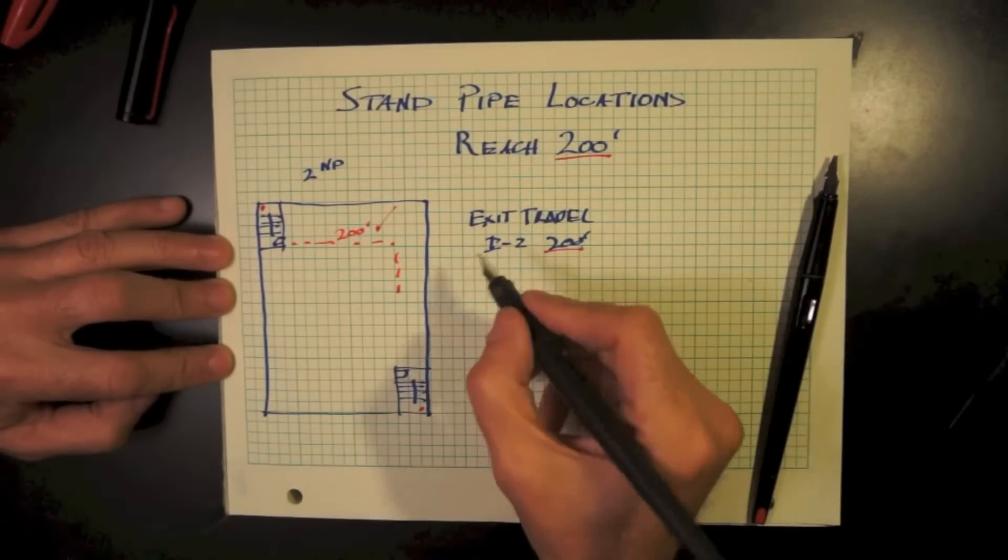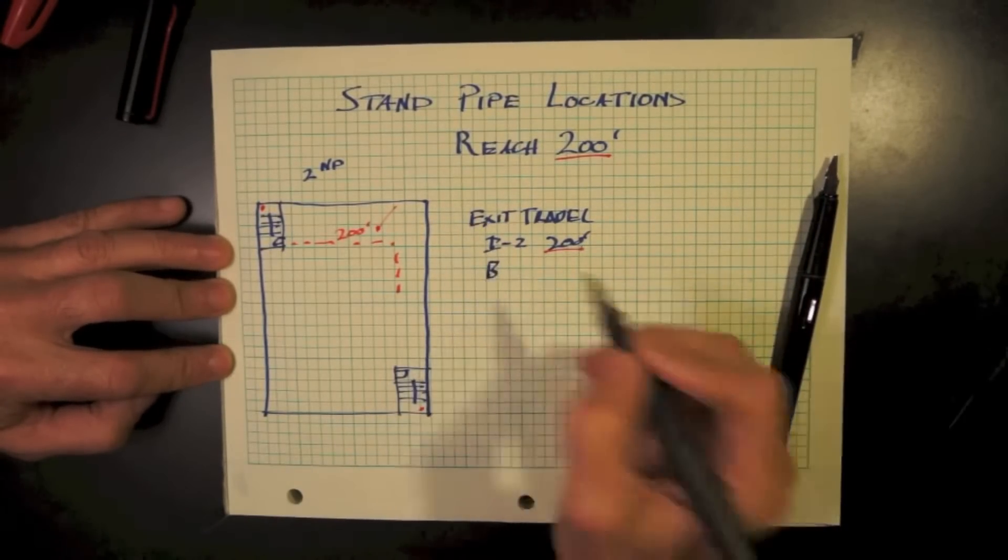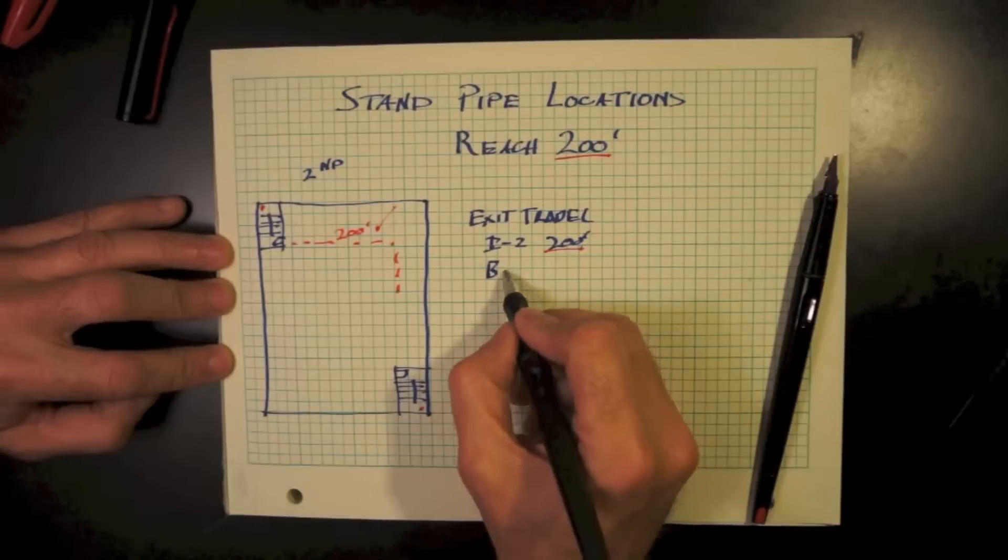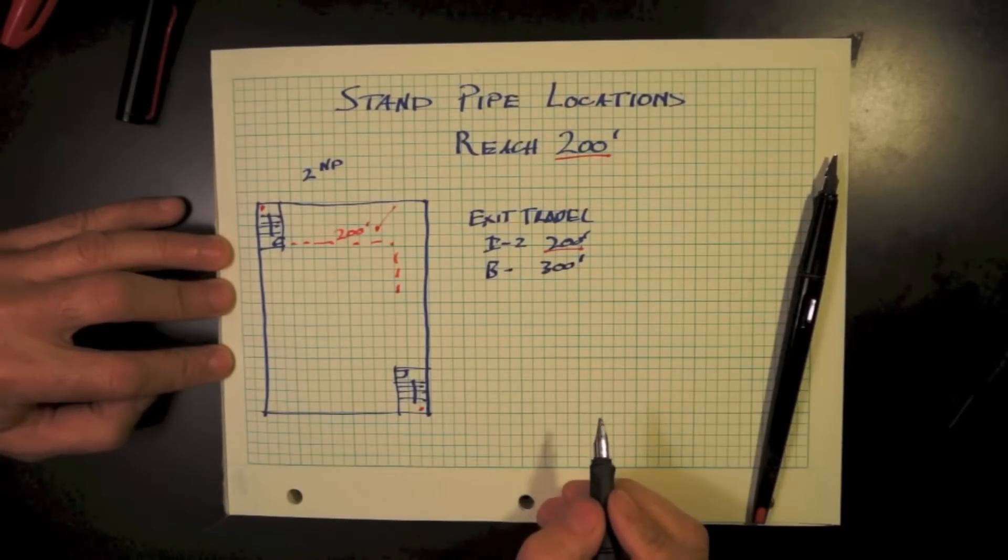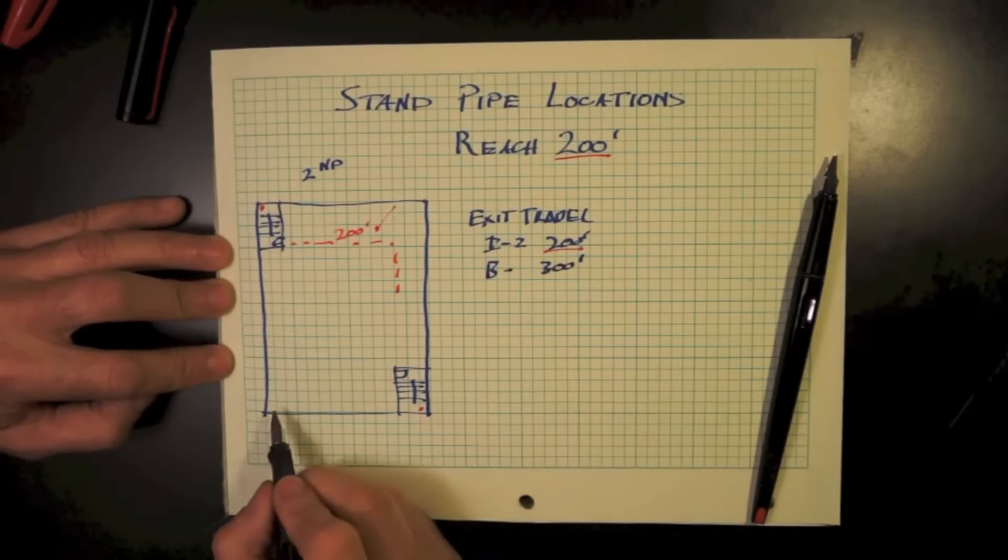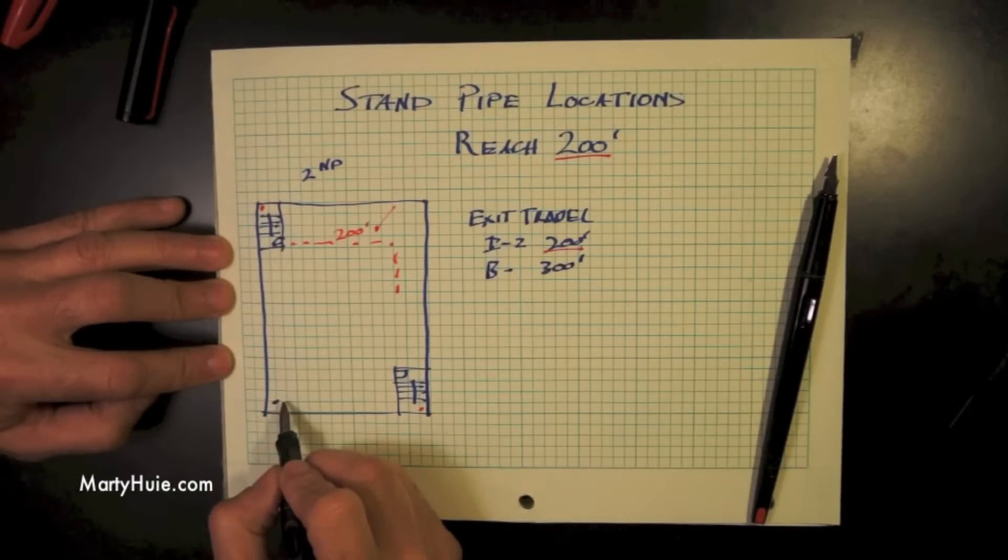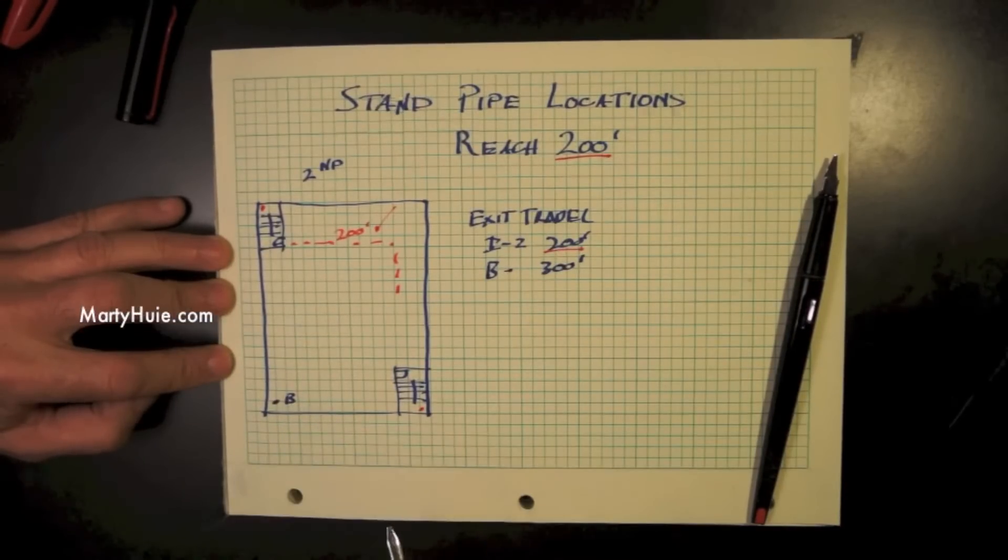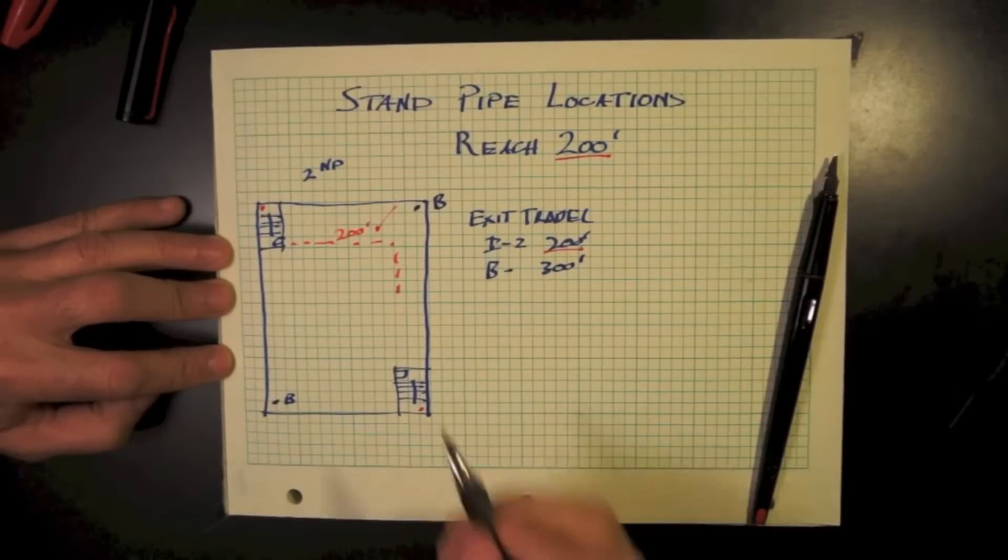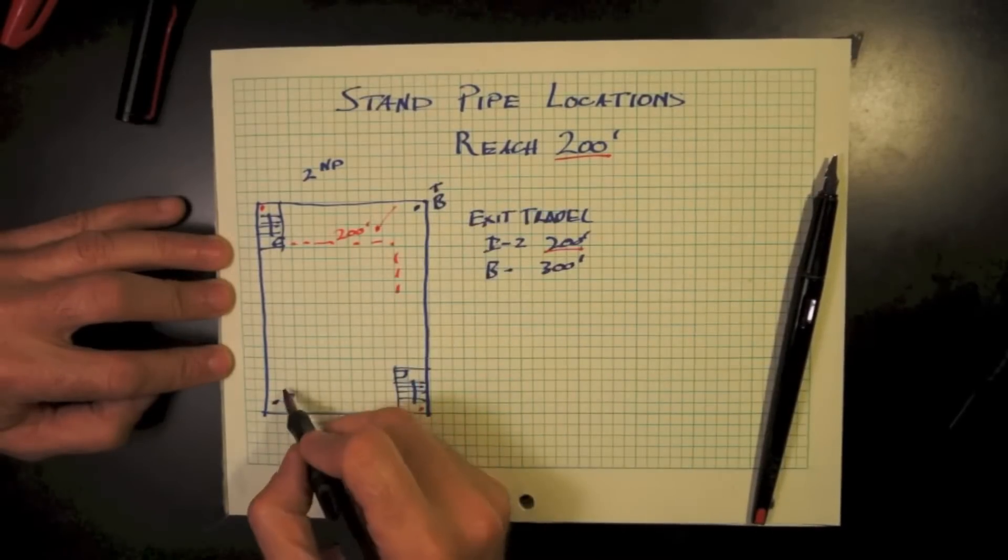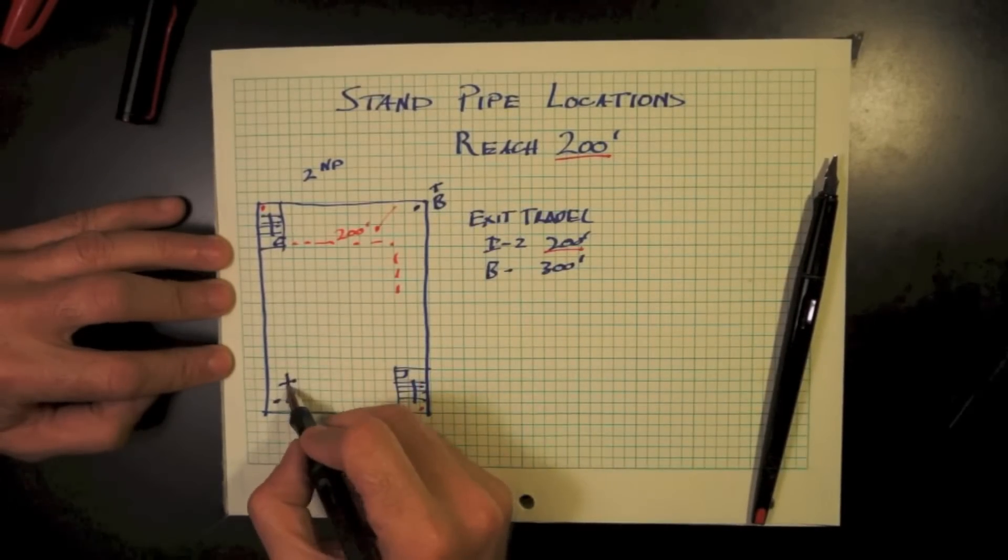In other healthcare occupancies, other than I-2, in B occupancy, our travel distance is 300 feet. Therefore, you will need additional standpipes in order to access a standpipe within 200 feet. Just because the travel distance to an exit increases does not mean the travel distance to a standpipe has increased.